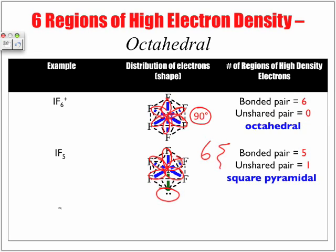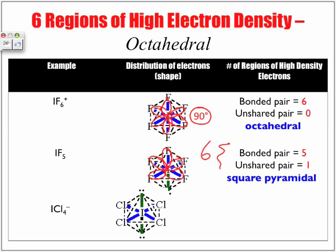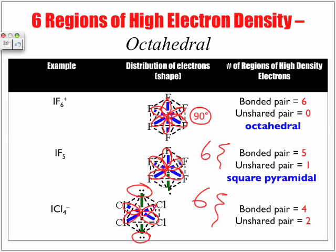In our last example, ICl4 with a negative one charge, iodine is our central atom. We have four bonded pairs and two unshared pairs, still giving us a total of six regions. But now the shape we have to memorize is square planar.